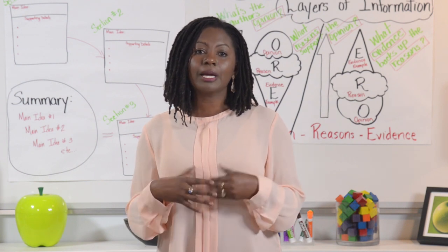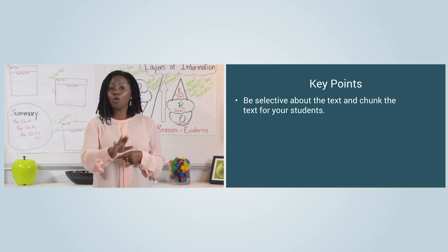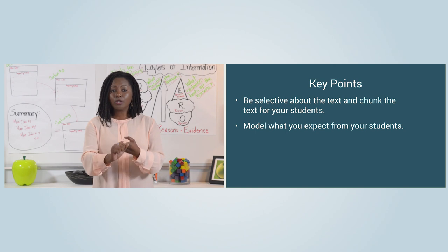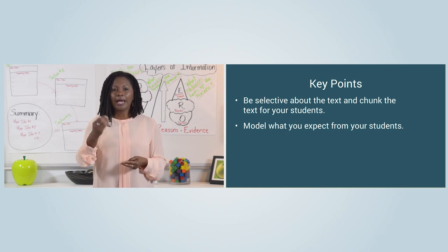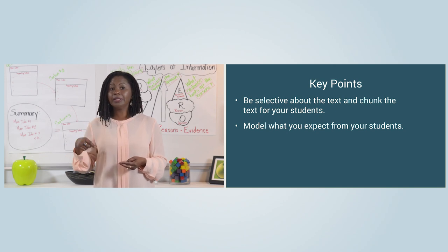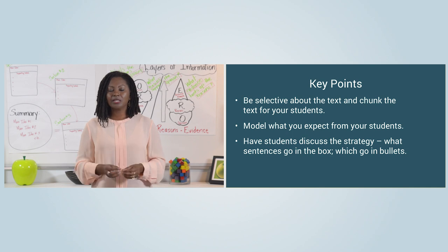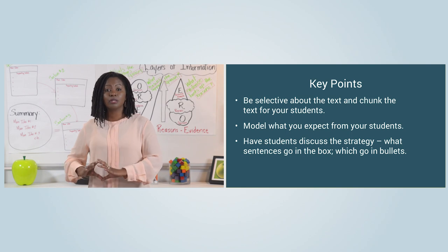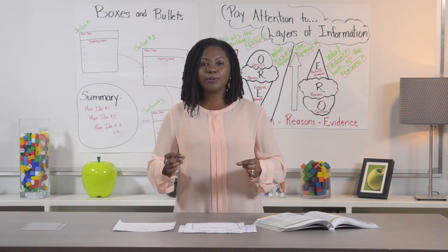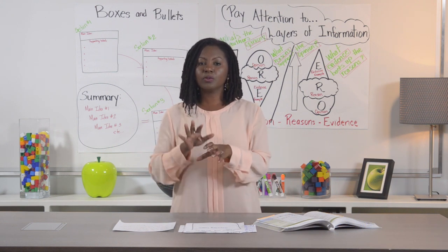Three things to remember when doing boxes and bullets. First, be very selective about the text and chunk it for students — don't give them a whole three-page article and have them just go at it. Second, model it: walk them through your thinking as you read, asking yourself, is this a good sentence for a box or a good bullet sentence? And finally, always have students discuss the strategy — the sentences they're choosing for the box and for the bullets. Remember: the person doing the talking is the person doing the learning, so give students opportunities to talk to each other about what they're finding as the main idea and supporting details.